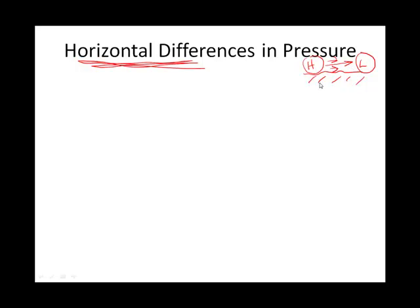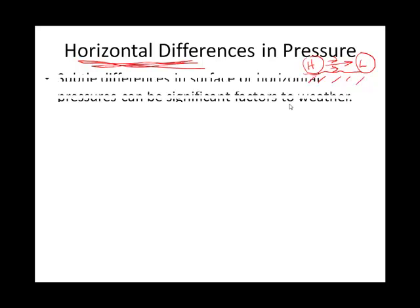Wind is created by air wanting to move from high pressure to low pressure. So how do horizontal differences in pressure come about? I'll talk about three ways we get these differences in horizontal pressure, and they have certain consequences — they create wind, and they can also have consequences in severe weather and regular precipitation.